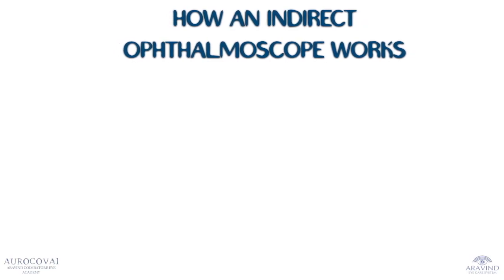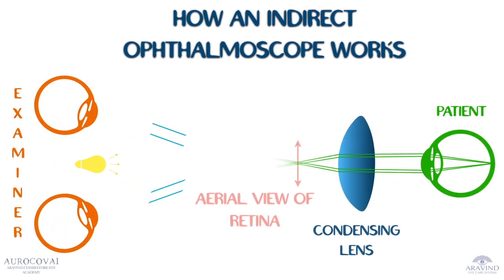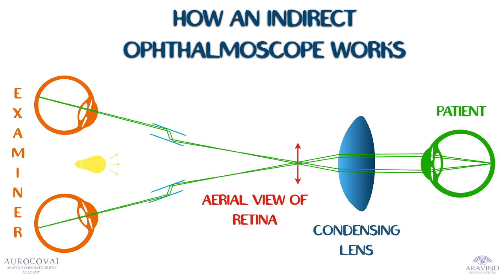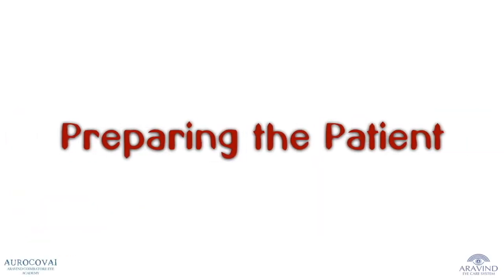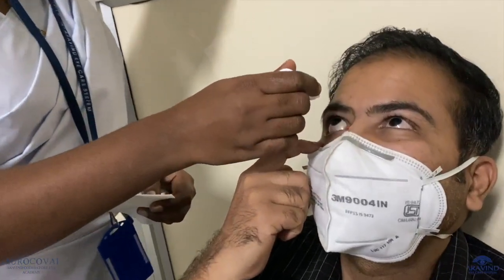The basic principle of the indirect ophthalmoscope is to make the patient's eye highly myopic by placing a strong convex lens in front of it. The emergent rays form a real inverted image between the lens and the observer's eye. Binocularity is then achieved by artificially reducing the observer's IPD from 60 millimeters to approximately 15 millimeters by the help of prisms and mirrors.